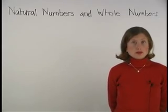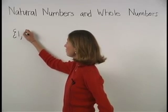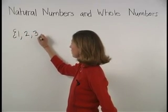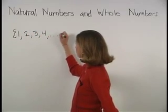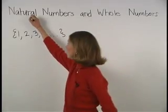The set of counting numbers, 1, 2, 3, 4, and so on, is called the set of natural numbers.